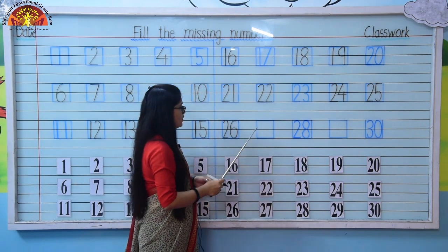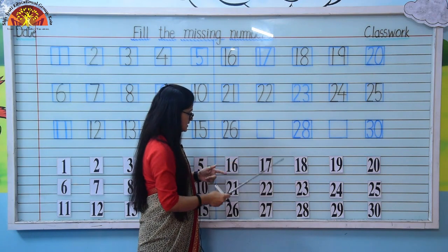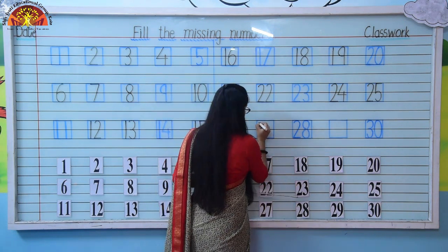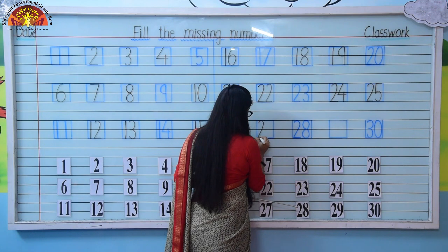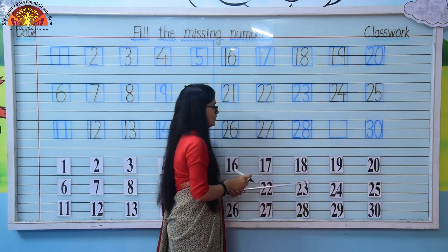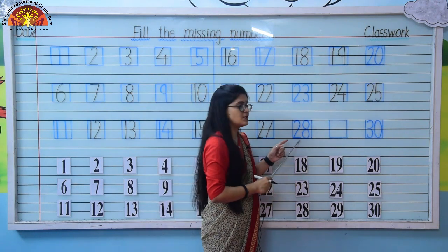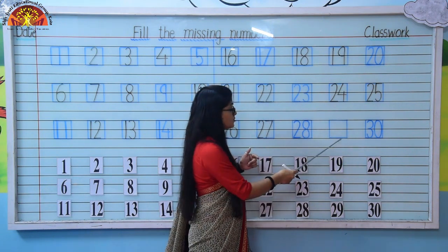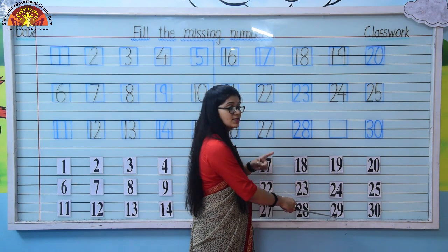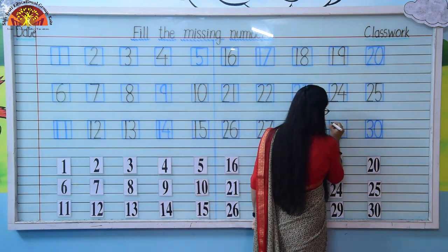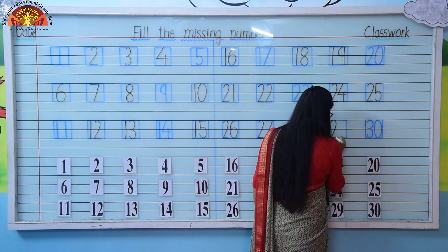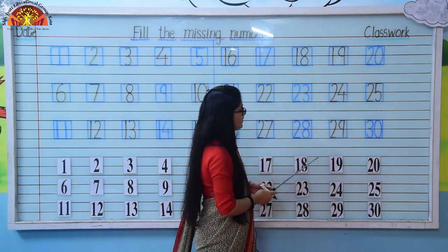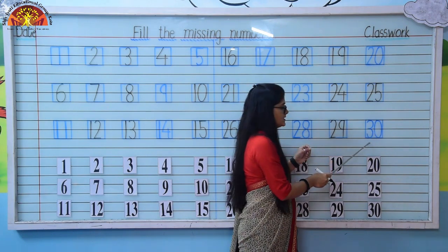Again, one number is missing here. So which number comes after 26? It's 27. So here we will write number 27. And after that, number 28 — it's already written. Come to next one — the number is missing. So which number comes after 28? After 28 it's 29. So here we will write number 29: 2, 9, 29. And the last number is 30 — that is already written over here.